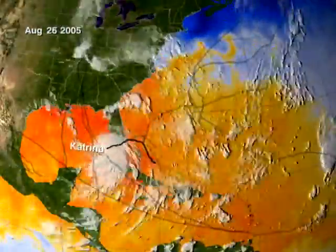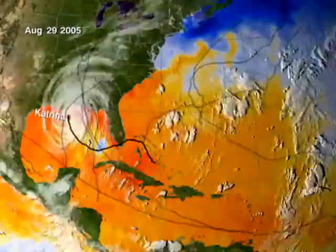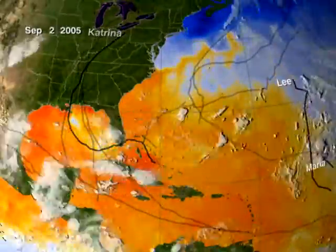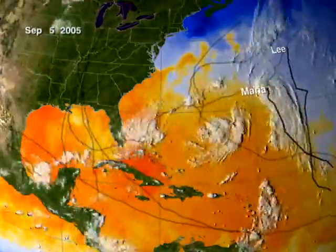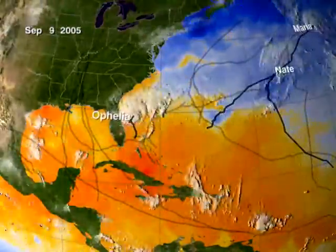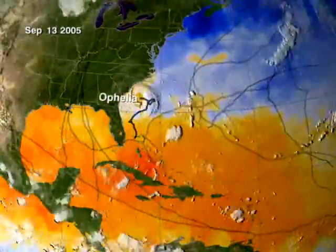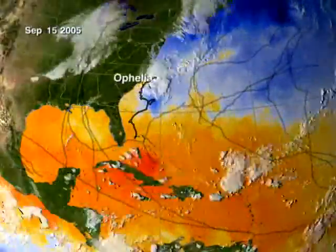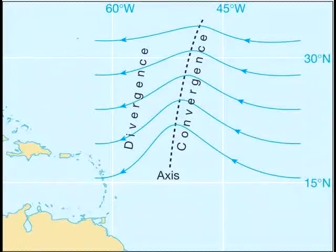Hurricanes typically develop in late summer or fall when ocean temperatures have reached 80 degrees Fahrenheit, providing the necessary heat and moisture. They start as tropical disturbances in the eastern parts of the oceans. These tropical disturbances can be triggered by a variety of factors such as easterly waves — undulations in the trade winds — where the weak convergence on the east side of the wave could possibly develop into a stronger system if all the factors come together.